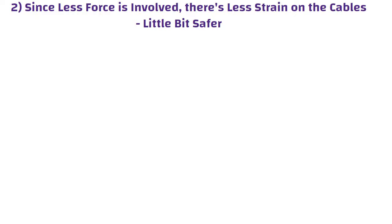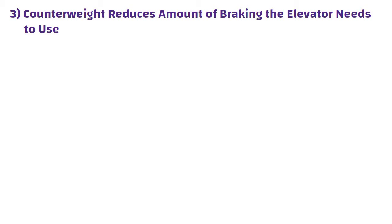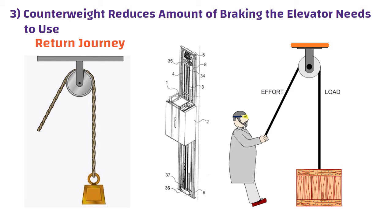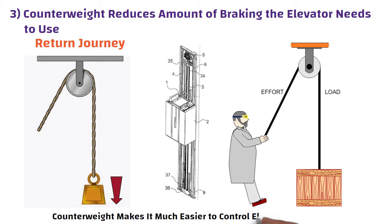The counterweight also reduces the amount of braking the elevator needs to use. Imagine if there were no counterweight — a heavily loaded elevator car would be really hard to pull upwards, but on the return journey it would tend to race to the ground all by itself if there were not some sort of sturdy brake to stop it. The counterweight makes it much easier to control the elevator car.